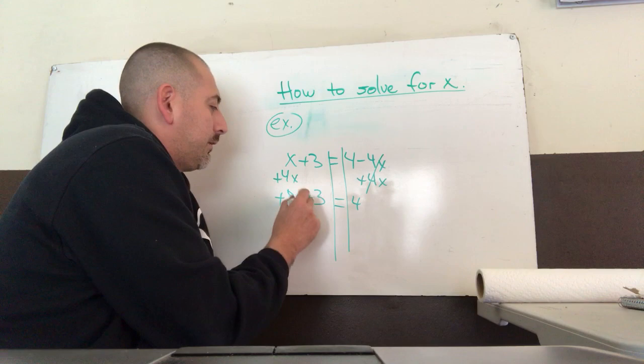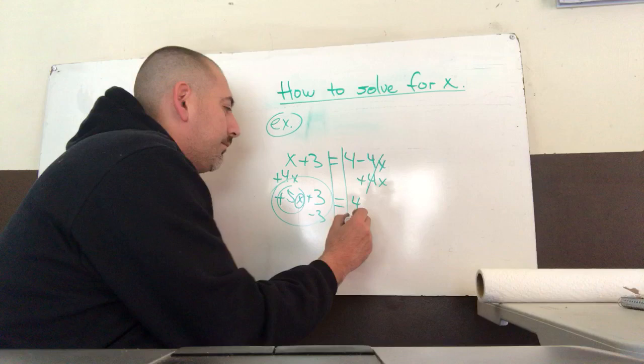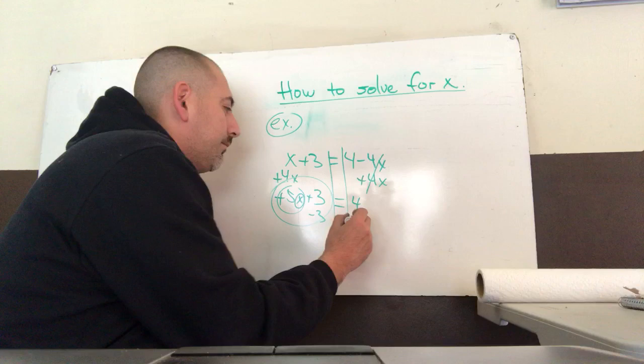5x plus 3. So now, same method, get rid of the three, and lastly you can just divide.